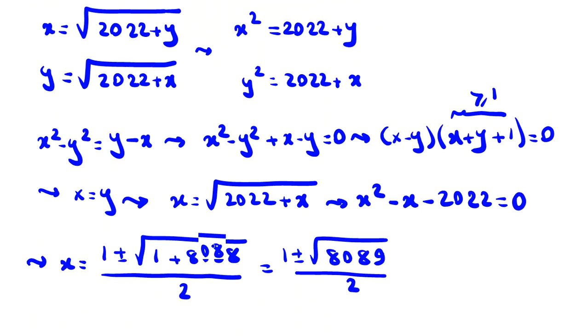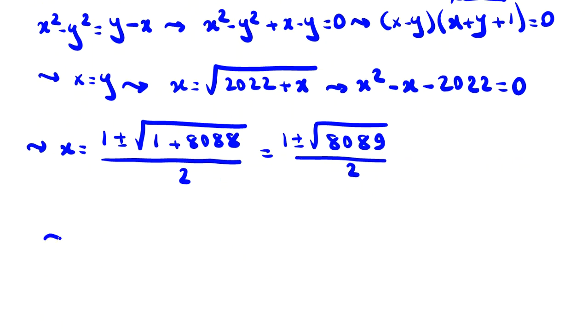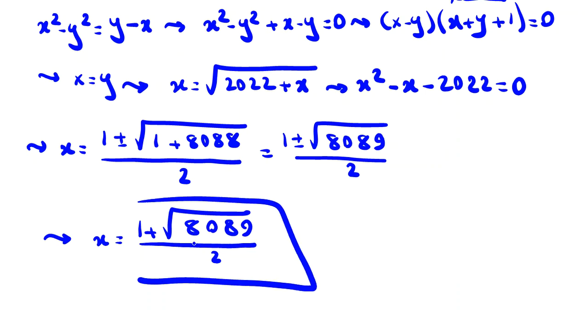We know x is greater than or equal to zero because it was a square root, so the minus is impossible. Therefore, x equals (1 plus square root of 8089) over 2. We have only one solution, so the sum of the solutions equals (1 plus square root 8089) over 2.